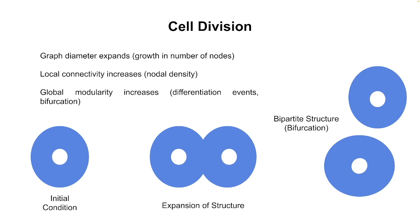Local connectivity tends to increase as nodal density increases, and global modularity increases as we get differentiation and bifurcation events. We have expansion of structure with cell division, starting from a single cell. As division events occur, cells fall into different categories — neuronal, intestinal, germ cells — and modules representing different tissues or regions develop over time. These things need to be accounted for in the representation.